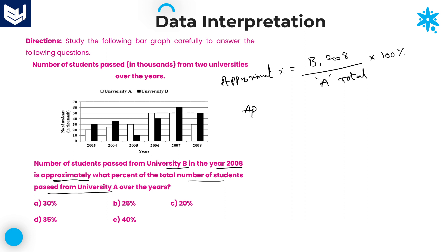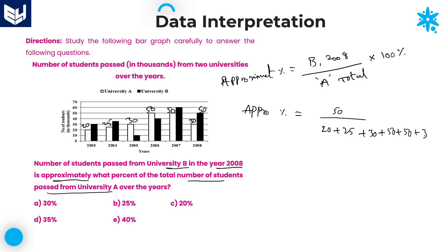University B in 2008 has a value of 50. Dividing by the total of University A: the values of University A are 20, 25, 30, 50, 50, and 30. Adding them: 20 plus 25 plus 30 plus 50 plus 50 plus 30 equals 205. So the calculation is 50 divided by 205, multiplied by 100, which equals 5000 divided by 205.